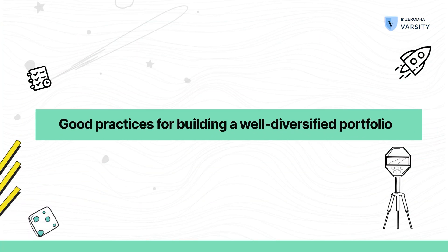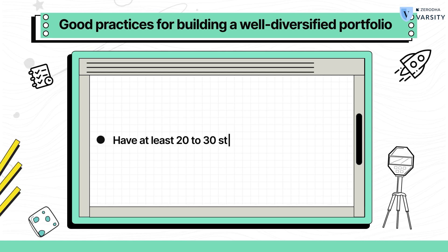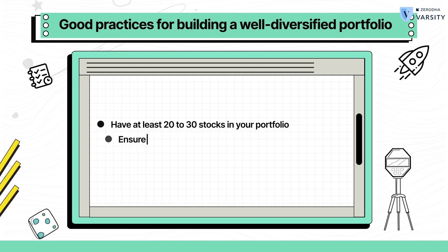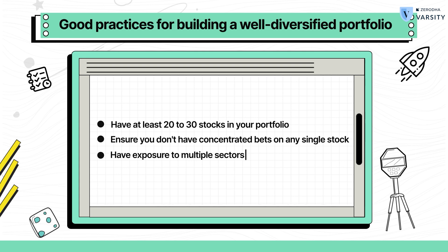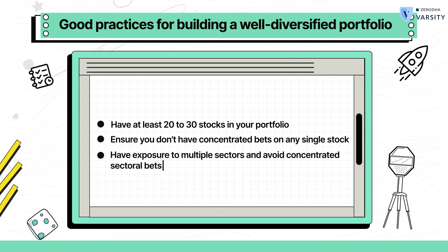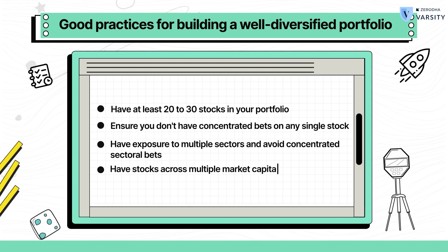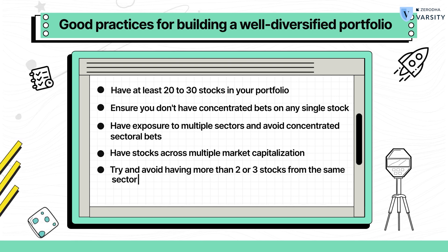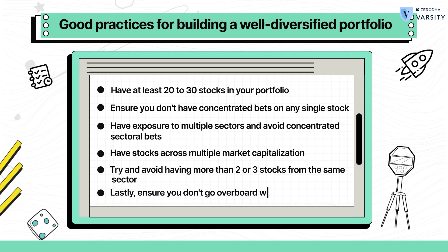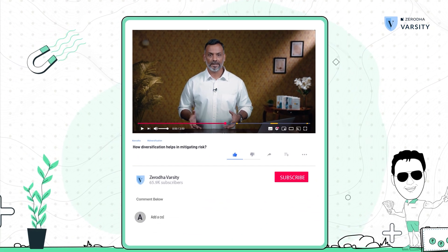Before I end this video, here are a few good practices to build a well-diversified portfolio: have at least 20 to 30 stocks; ensure you do not have concentrated bets on any single stock; have exposure to multiple sectors and avoid concentrated sectoral bets; have stocks across multiple market capitalizations; try to avoid having more than two or three stocks from the same sector; and ensure that you don't over-diversify. If you can think of any other points, please comment and let us know. I hope you enjoyed this video — I'll see you in the next one.